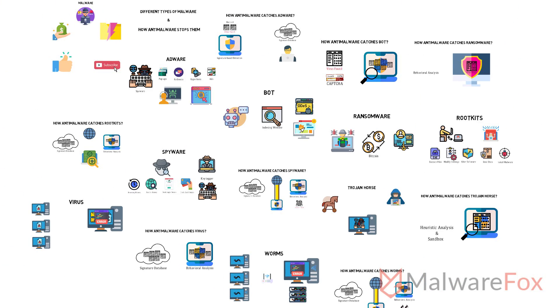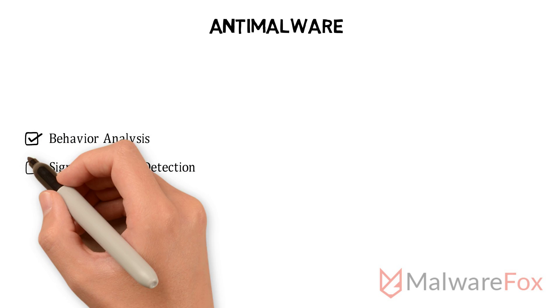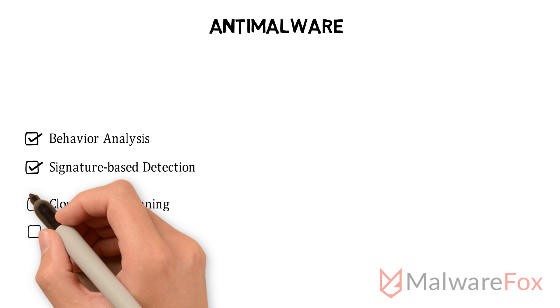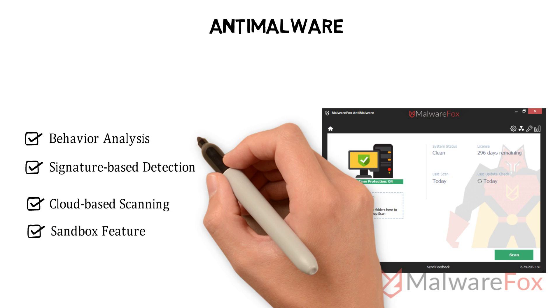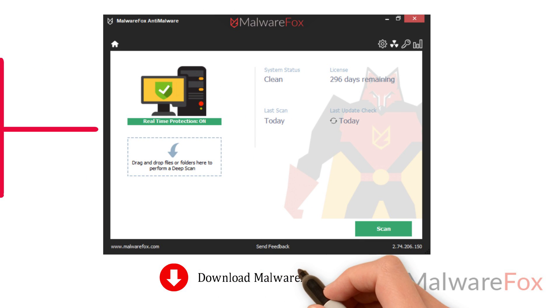These are common types of malware. Regular antivirus isn't capable of catching all these threats. A modern anti-malware, which has behavioral analysis along with signature-based detection, can catch all these threats. The anti-malware should also support cloud-based scanning and sandbox features. MalwareFox anti-malware contains all these features and works efficiently against all these types of threats. It uploads suspicious programs to the cloud for scanning so that your system runs smoothly during the scan. Install MalwareFox anti-malware on your system — the link is in the description.